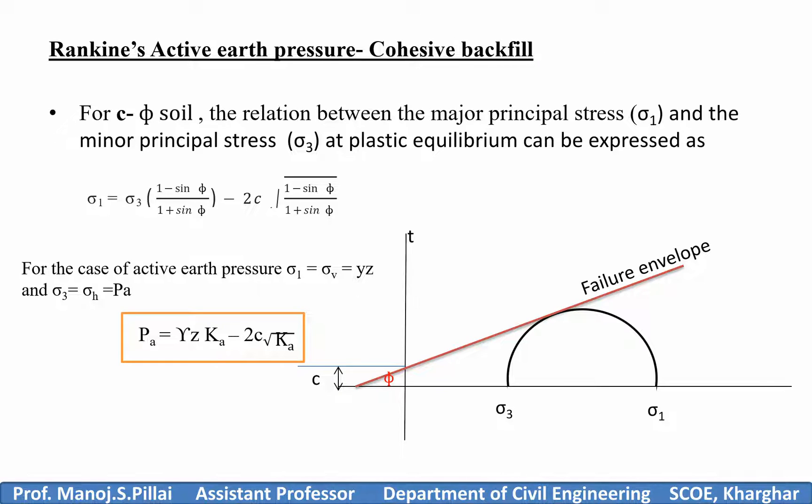Now, Rankine has given all the formulas. The Rankine active earth pressure for cohesive backfill is in this way. You have to remember this formula basically. Pa is equal to gamma Z Ka, where gamma is the unit weight of the soil, Z is the depth, Ka is your active earth pressure coefficient, minus 2C square root of Ka, where C is your cohesion.